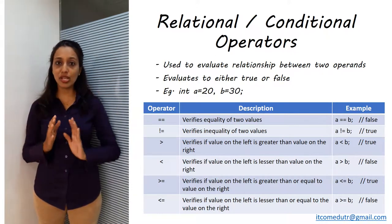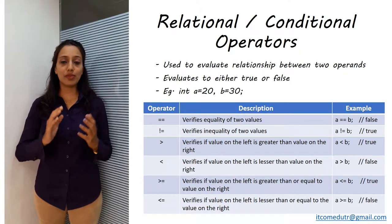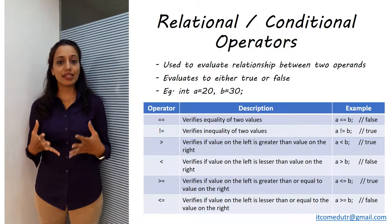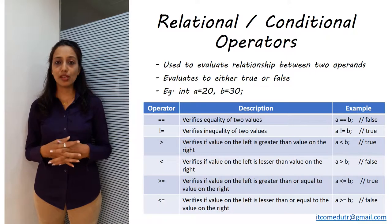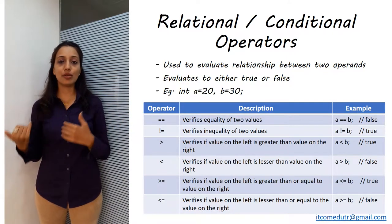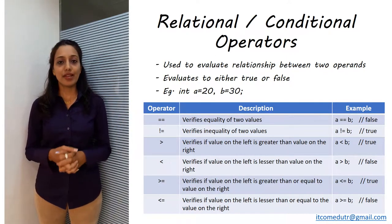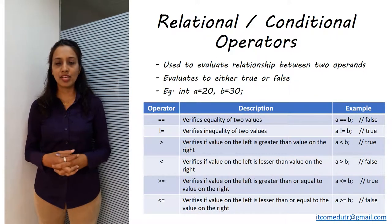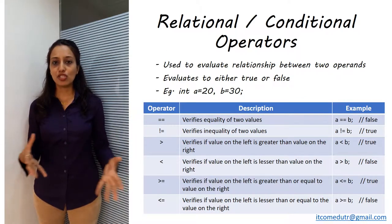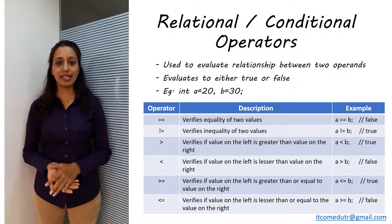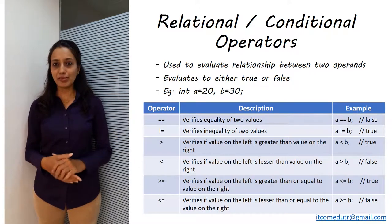The less than will check whether the left operand value is lesser or smaller than the right one. Likewise, less than equal to and greater than equal to will check whether the left one is greater than equal to or less than equal to the right operand. These are basic mathematical operations that you might have done when you studied mathematics or statistics in school. The same thing applies here and these operators are very self-explanatory.